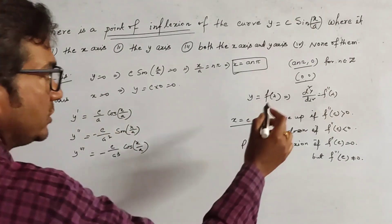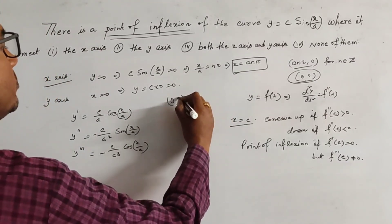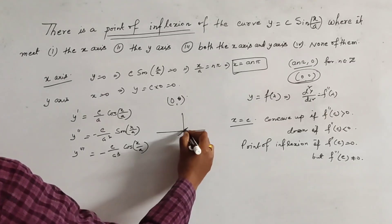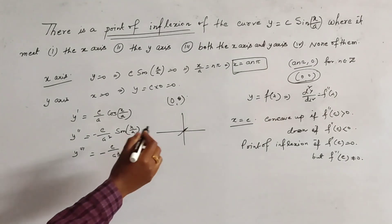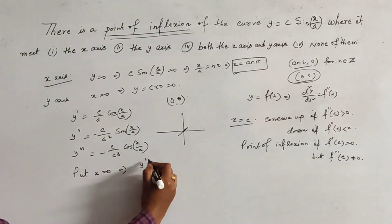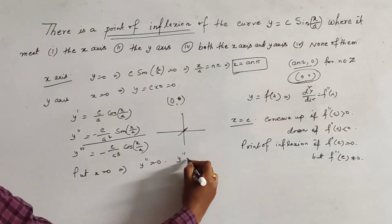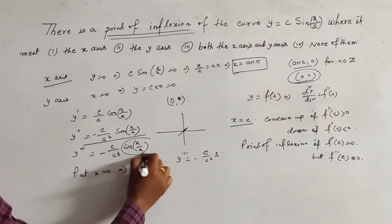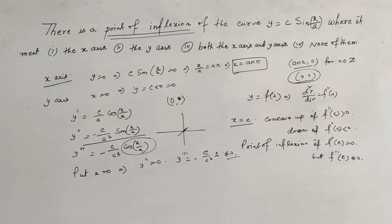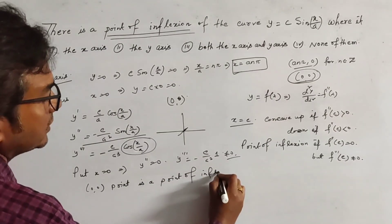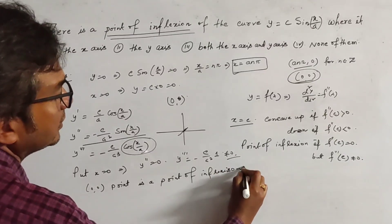Now if we take the point (0, 0), that is x equal to 0, then x/A is equal to 0. The second derivative y double dash at x=0 is equal to minus C/A² into sin(0), which equals 0. But y triple dash at x=0 is equal to minus C/A³ into cos(0), which is minus C/A³ into 1, and this is not equal to 0. So the point (0, 0) is a point of inflection.